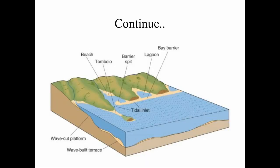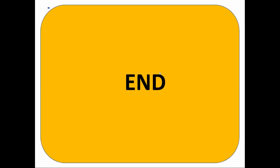Here you can see a beach, a tombolo connecting the main island with a small island, a barrier spit, tidal inlets, a lagoon, and a bay barrier enclosing the lagoon. These are the wave-cut platforms and terraces. In my next videos I will cover individual videos on these landforms, so please subscribe to this channel and share with your friends to see more videos on geology.